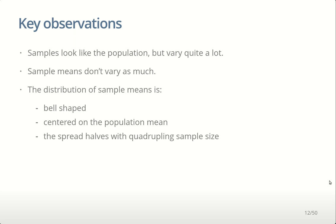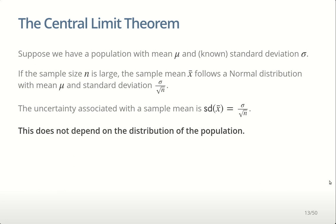We get this bell-shaped distribution, and it turns out we can say quite a lot about it — it's a normal distribution, or Gaussian distribution, and we have a bunch of mathematics telling us this essentially always happens. If we have a population with mean mu and standard deviation sigma, then as long as the sample size n is large, the sample mean x-bar will follow a normal distribution centered on the population mean, with a standard deviation that depends on the population spread and the sample size.